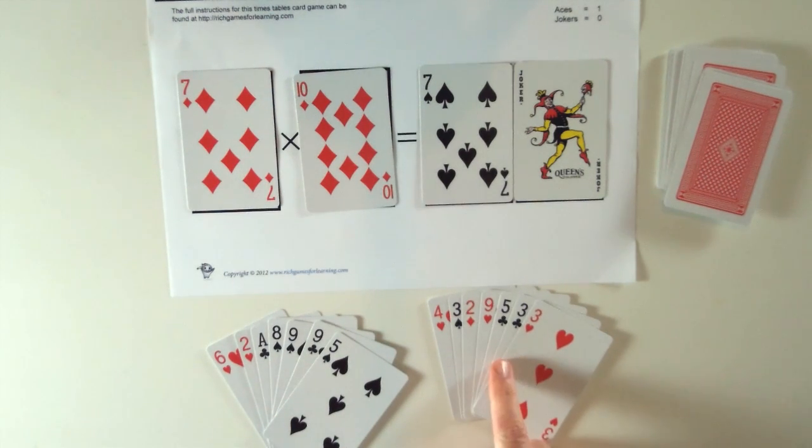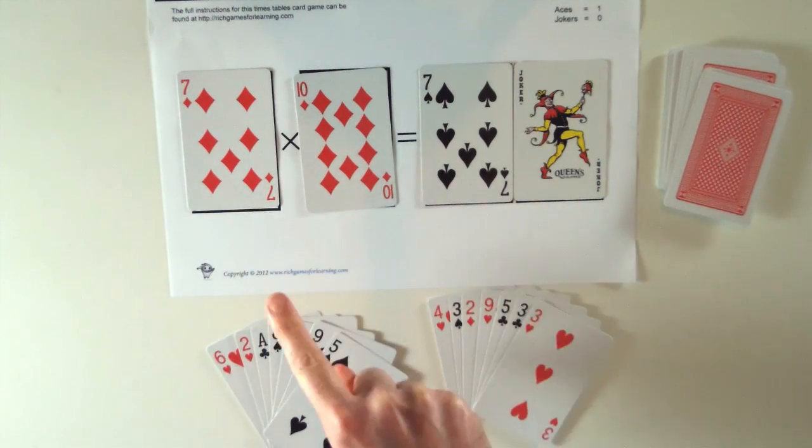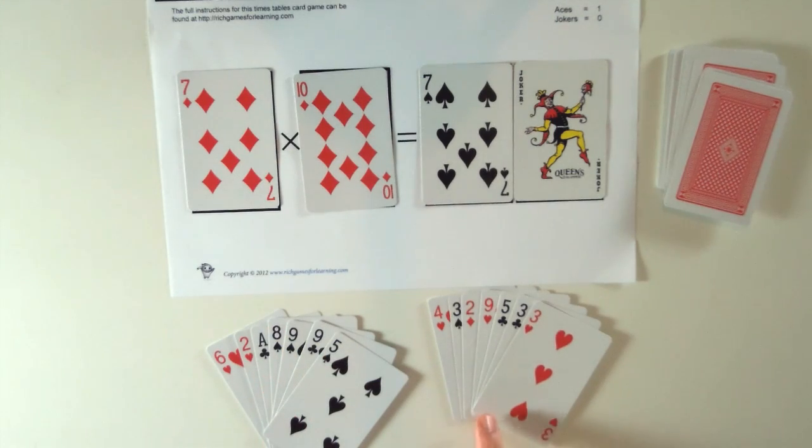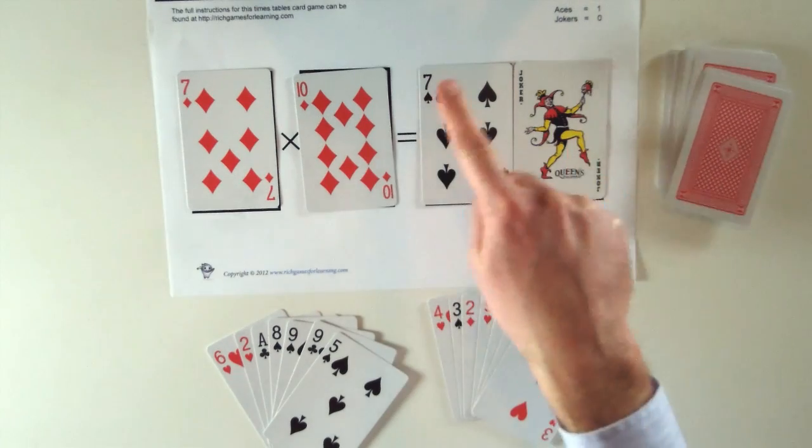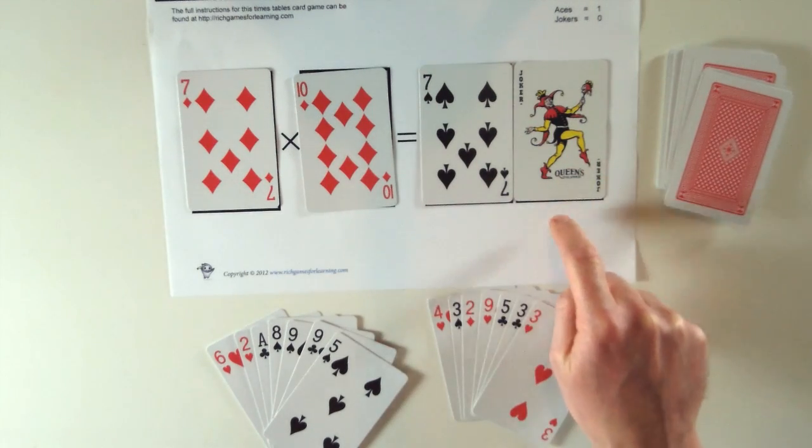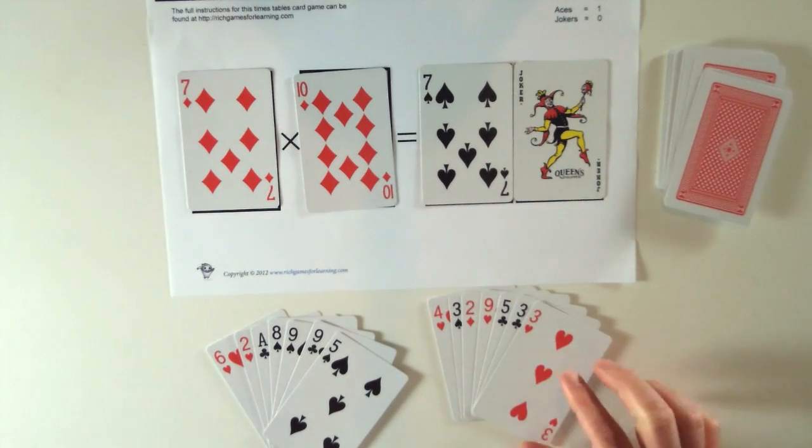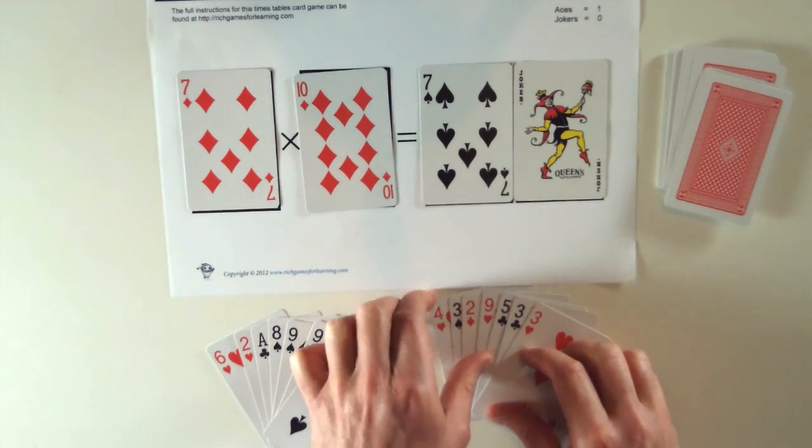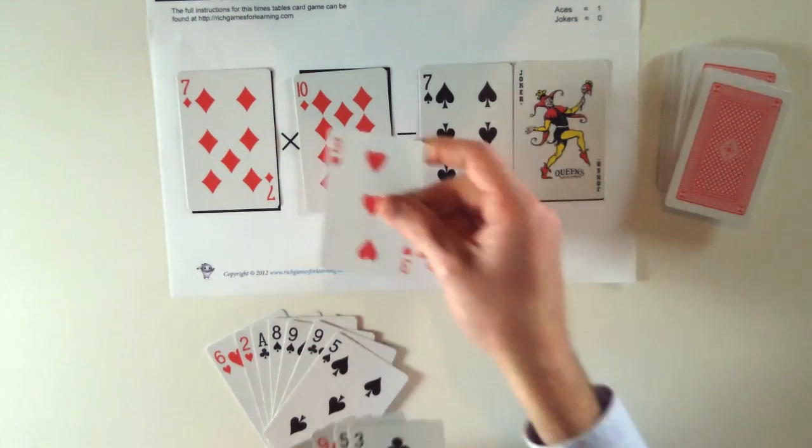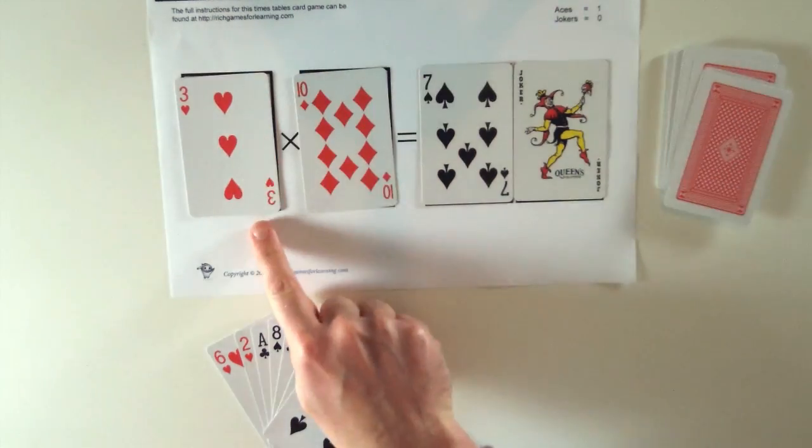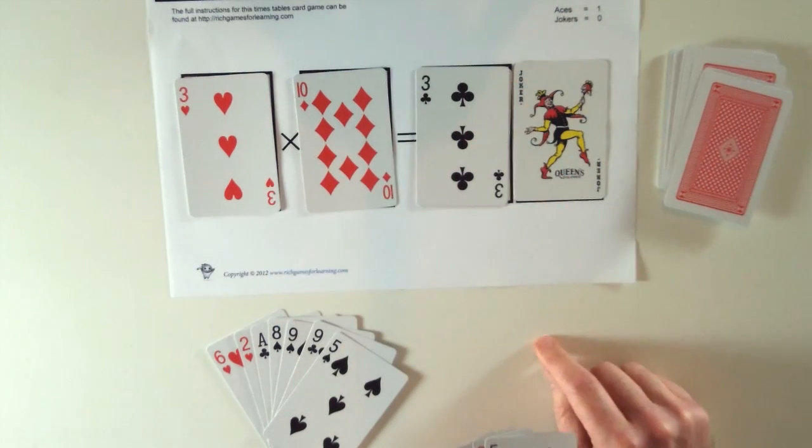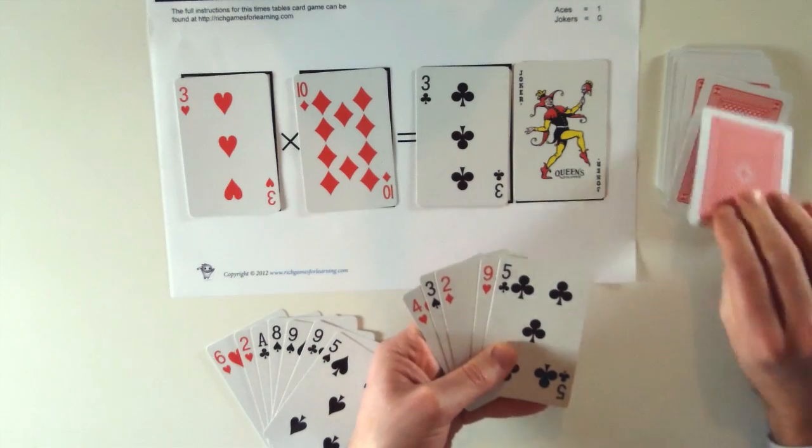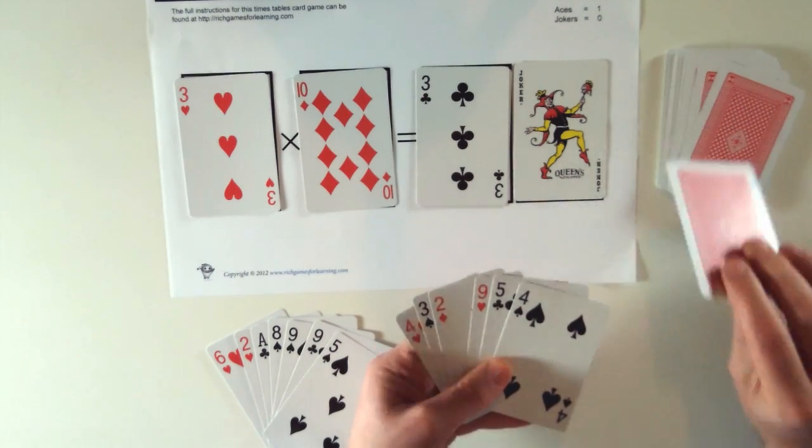Now this player has a choice of putting four more cards down to make a completely different sum, or only putting a couple of cards down to use in conjunction with the cards that are already here to make a completely different sum. So for example, this player can put the three there and have three times ten equals thirty. Alright, and they've used two cards so they pick another two cards up.